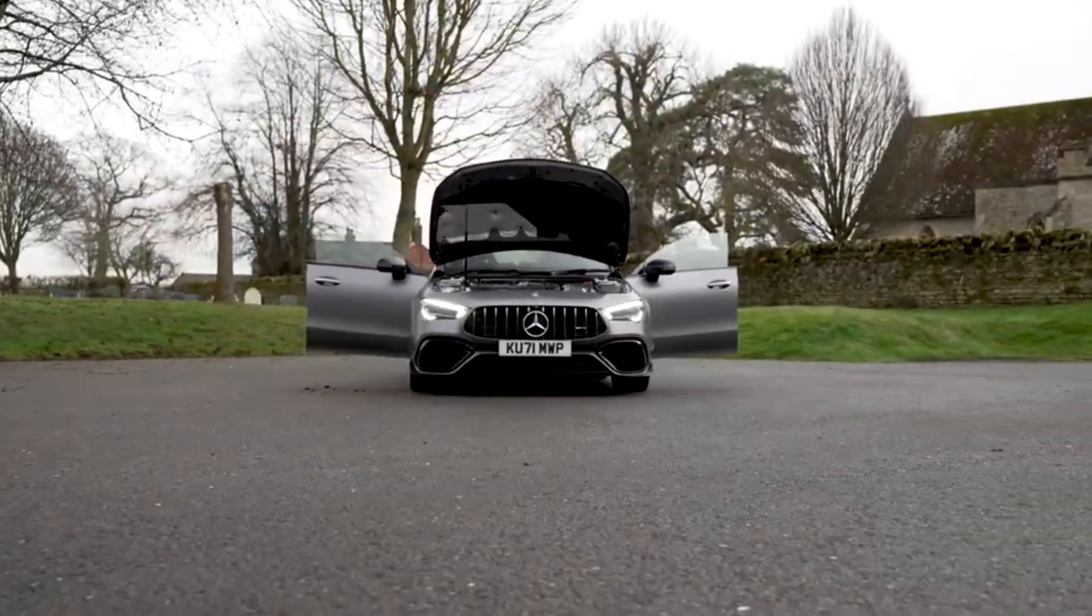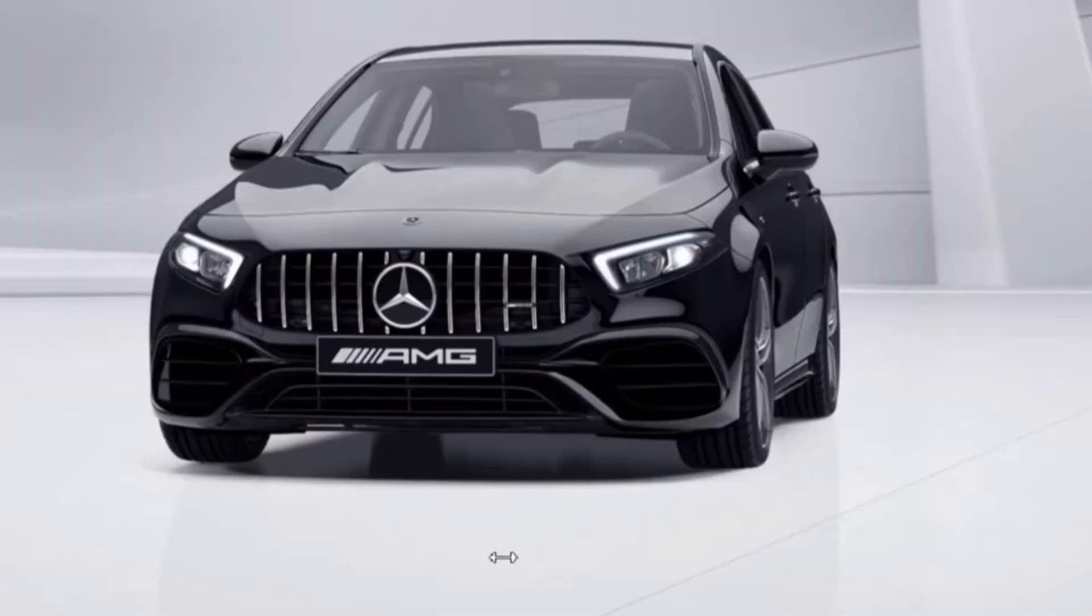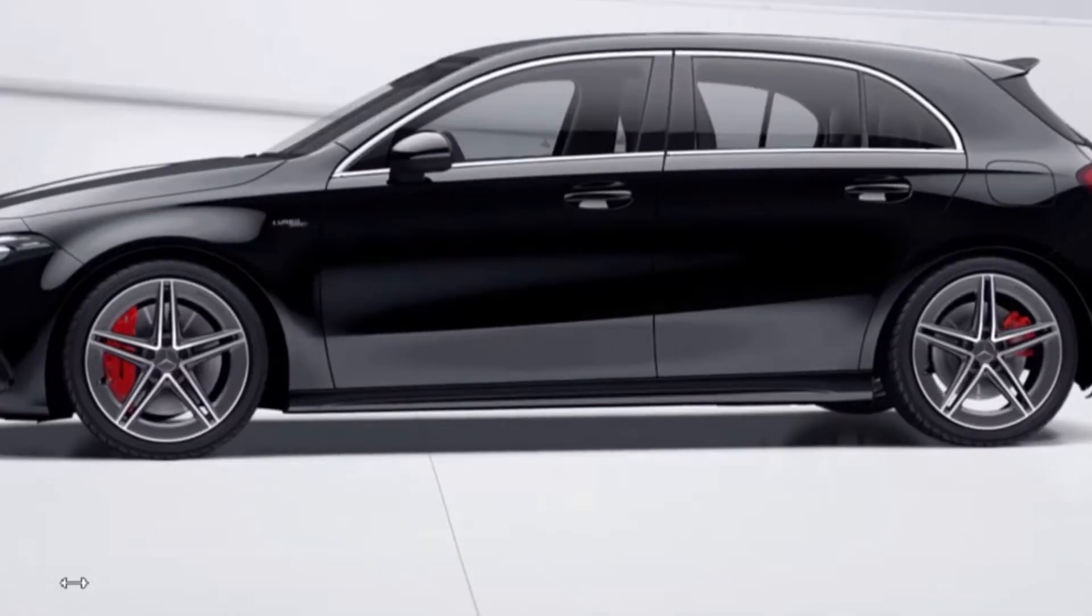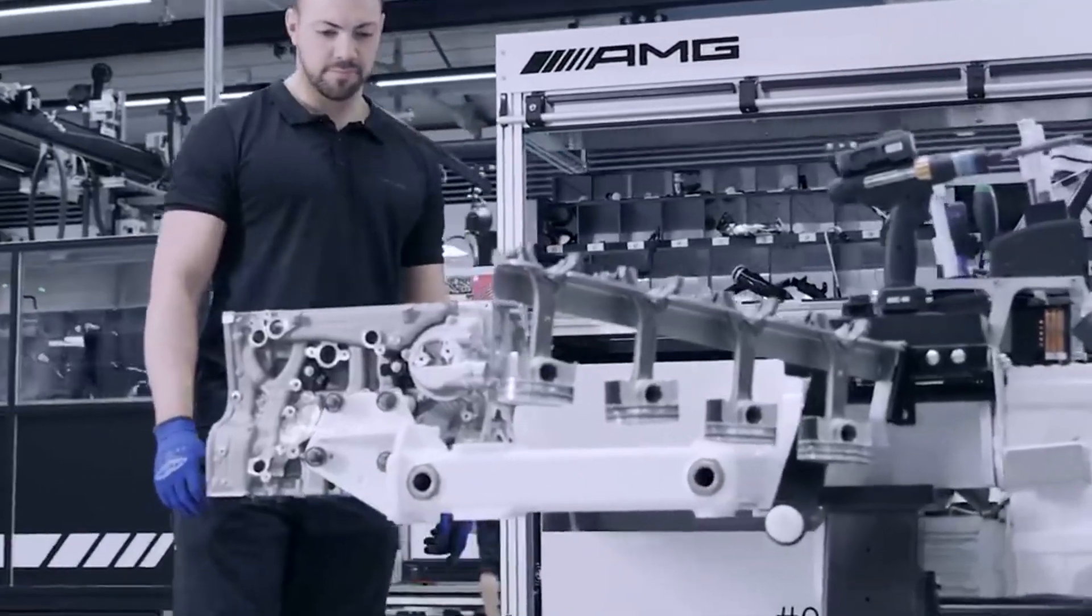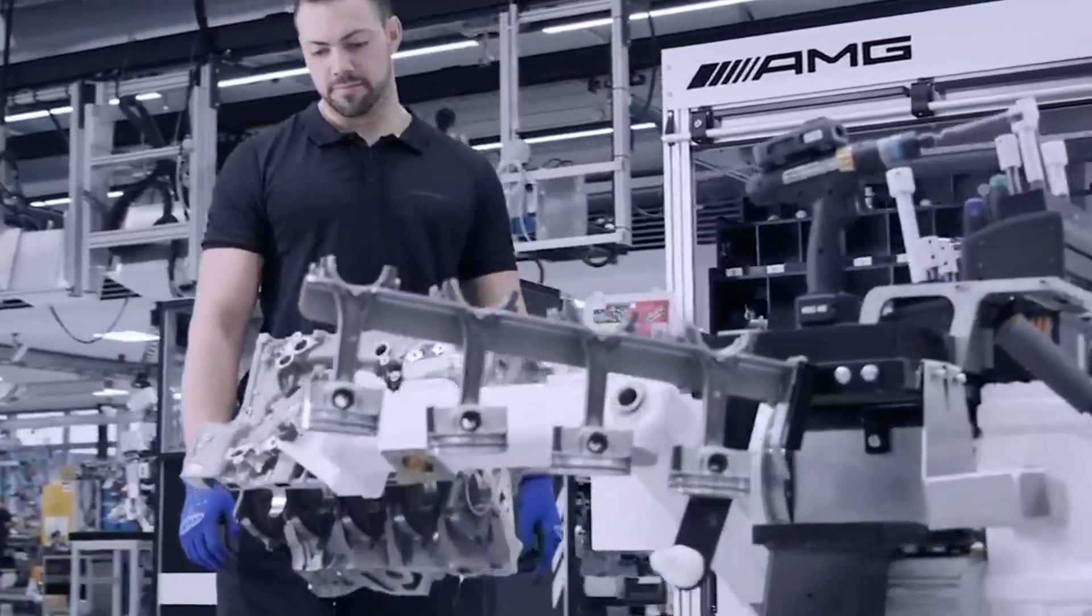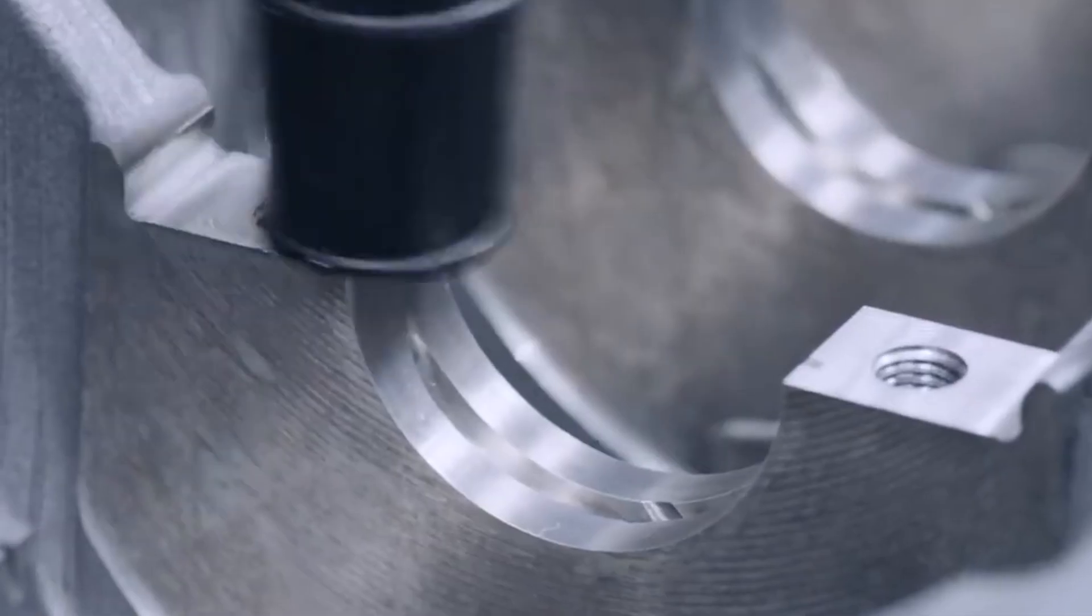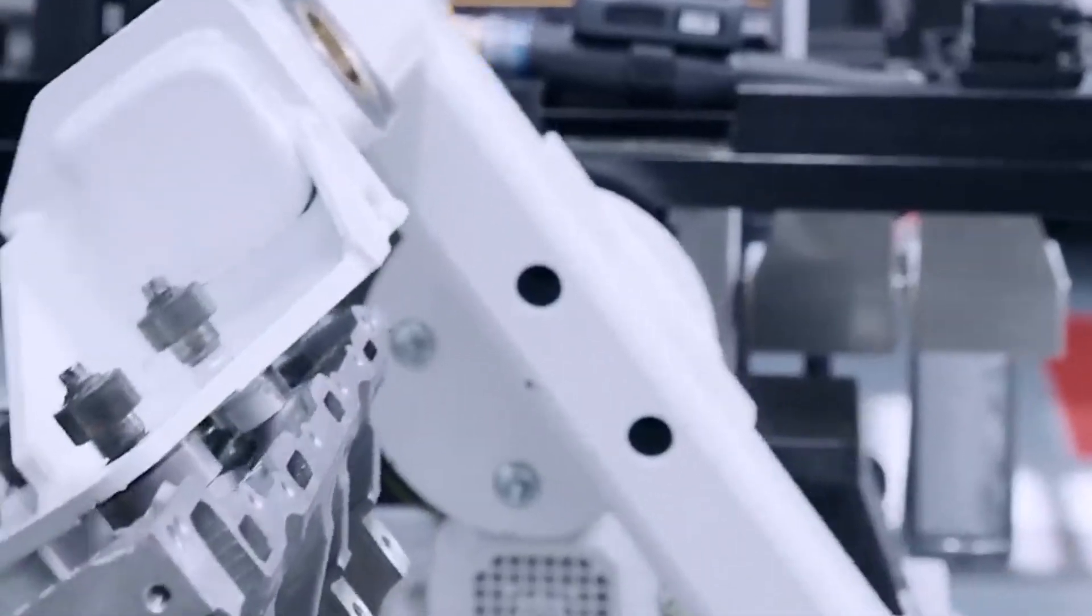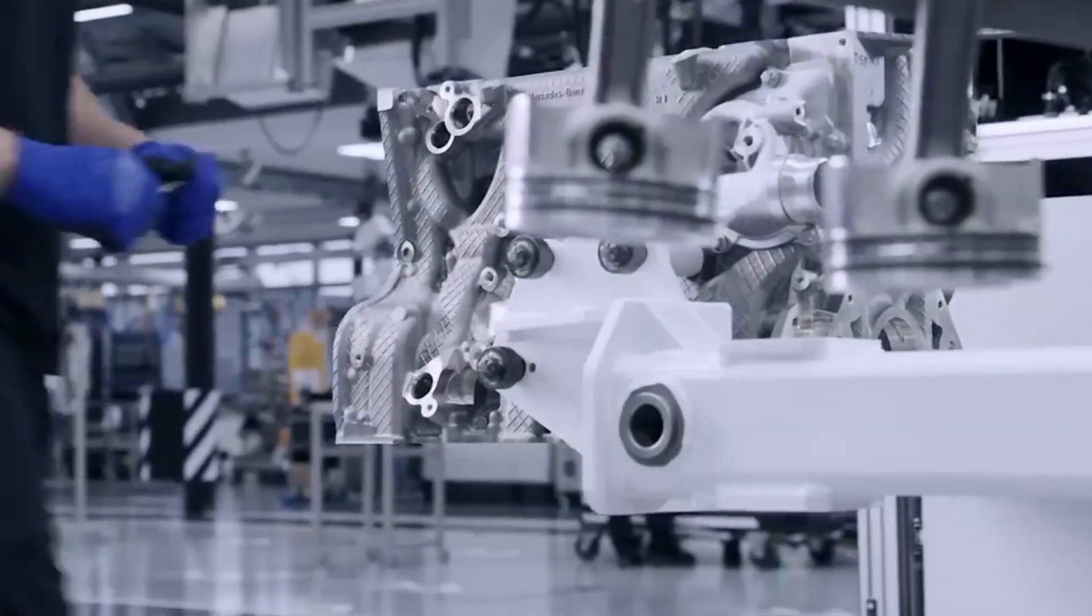What if I told you the most powerful four-cylinder engine on Earth isn't tucked inside a race car, but powers everyday vehicles like the Mercedes A45? Skeptical? You're not alone, but this engineering marvel, the Mercedes M139 engine, produces jaw-dropping power while staying compact and efficient. Curious about how it all works? Stick around as we uncover the secrets behind this groundbreaking machine that redefines performance. Let's dive right in.